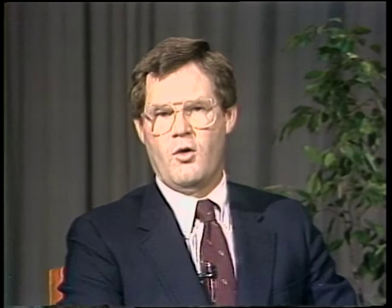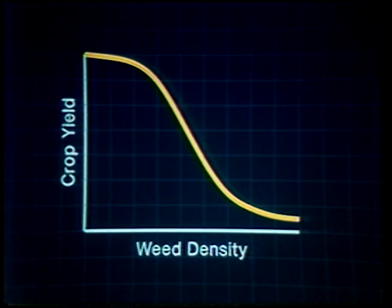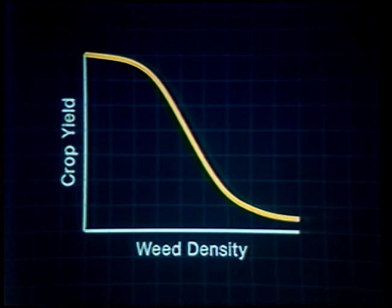This is a stylized weed-crop competition curve. The y-axis is the response of crop yield and the x-axis is weed density. Weed density increases as you move left to right — there are more weeds as you move to the right. Crop yield increases as you move higher on the y-axis. The curve essentially suggests that as weed density increases, the potential crop yield decreases. However, if we look closely at this curve, we can begin to understand the crop-weed relationship.